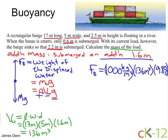The meters cubed here cancels with these meters cubed. And a kilogram meter per second squared, that's a newton. And so we get a buoyancy force, or I should say an additional buoyancy force of 1.3 times 10 to the sixth newtons.